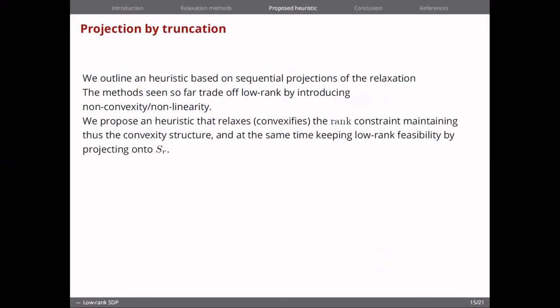So, the heuristic that we are going to propose is going to relax this rank constraint, so it's going to keep this convexity structure, but at the same time we want to keep low rank of all the solutions. And this is going to be achieved by projecting into these low rank spaces. The relaxed problem is this, and in the case where we have a positive semi-definite matrix, then the nuclear one-norm function is going to be equivalent to the trace. And this structure, as we see in problem formulation 5, is going to be the classical SDP.